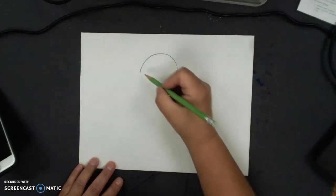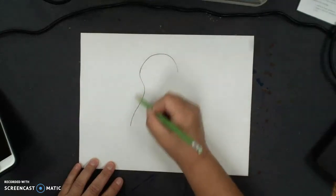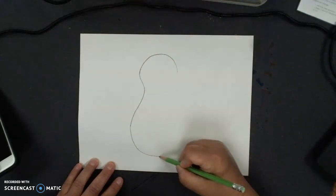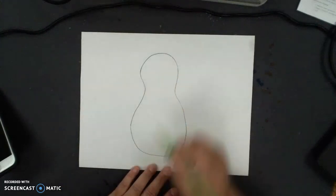Then it's going to curve in and curve back out so that it's a little bit wider than the first curve that we made. We're going to come around and then go back up, and it's okay if it's not perfect.